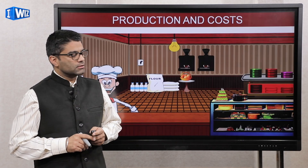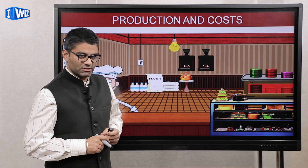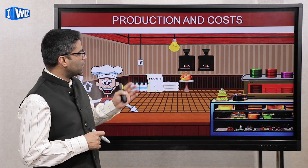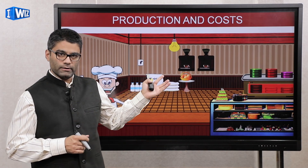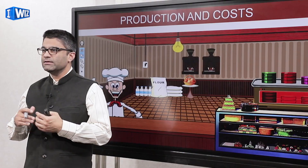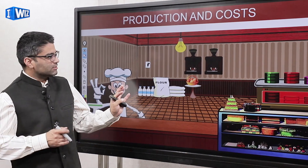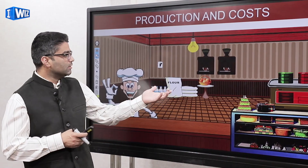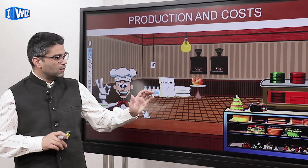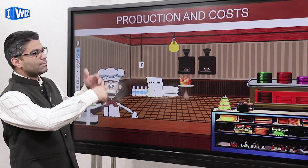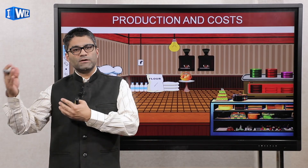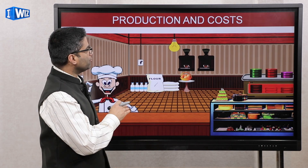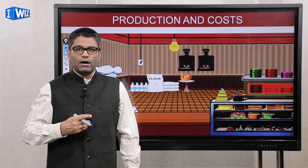Let's conclude the chapter on costs and production with this last video. What we're going to talk about here is the long run. So far everything we've done has been with the expectation that certain inputs are kept fixed because you cannot change them in the short run. For example, we can hire more people or get more raw material, but we cannot double the size of the store overnight or open up a franchise in a different city overnight — those things take time.